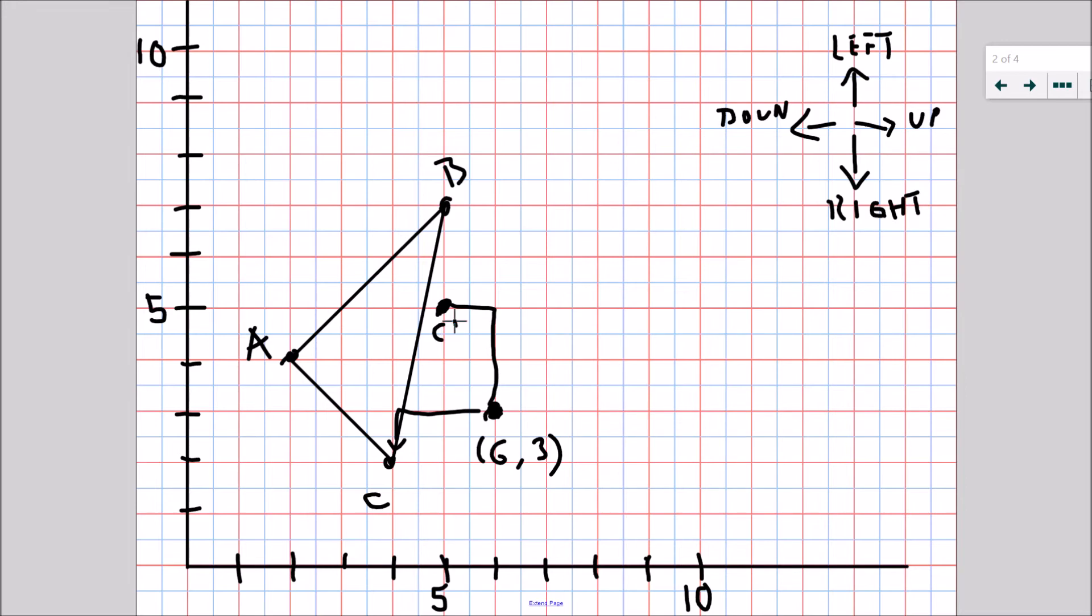A is one up and one, two, three, four left. Well that one up is going to turn into one right. And that four left is going to turn into one, two, three, four, up.